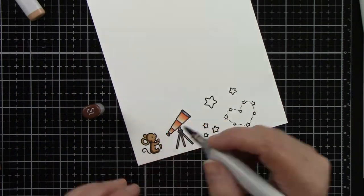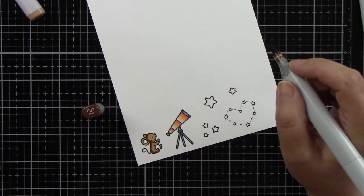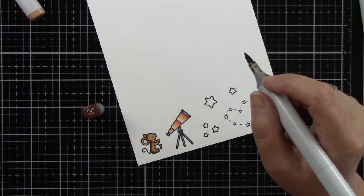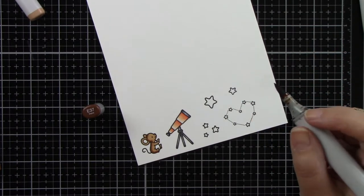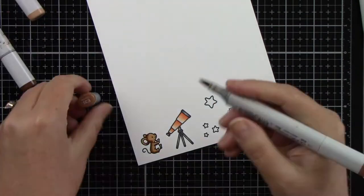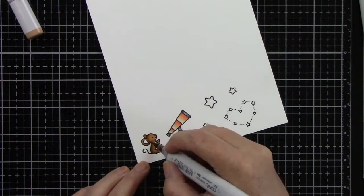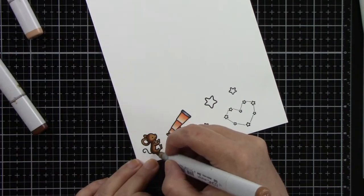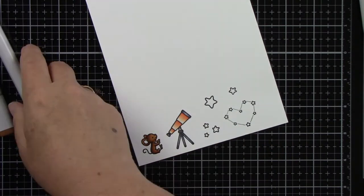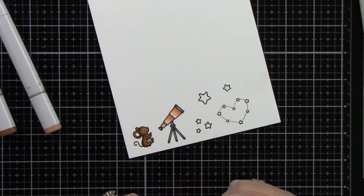For this cute little mouse, I'm using E31, 33, 37, and 35. Then for all of the stars, I'm actually just going to use C1, a real light gray. I don't want to add colors to this because I want the lights to shine through, but I wanted to give it a little bit of shadow.